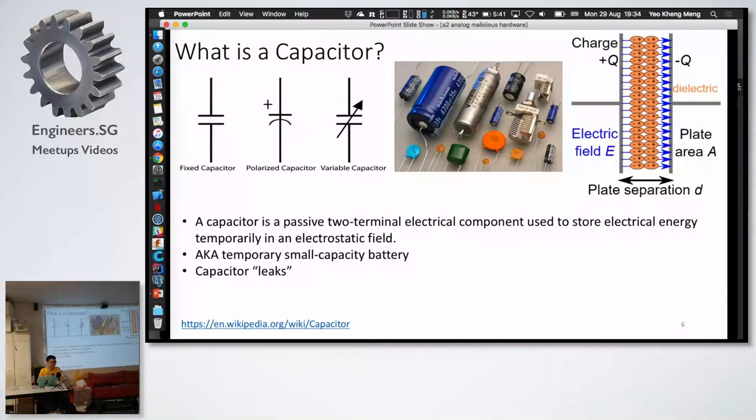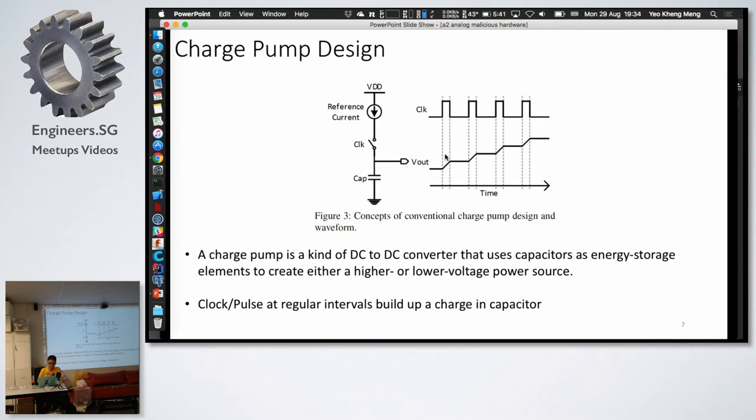Then the next thing is a capacitor. A capacitor is this passive two terminal component. You just think of it as a battery, a short-term battery. But the issue with the capacitor is that it can leak. That means after a while, if you don't charge it, the voltage will drop quite fast. Then the next is the concept of a charge pump. A charge pump is a kind of DC to DC converter that uses capacitor as an energy storage to create higher or low voltage power source. In this circuit, whenever the clock turns on, the capacitor charge, capacitor voltage will increase. Then when the clock goes down, the capacitor voltage remains constant. Every time the clock engages, the voltage will go up. So you can pulse up to a level that you actually want.